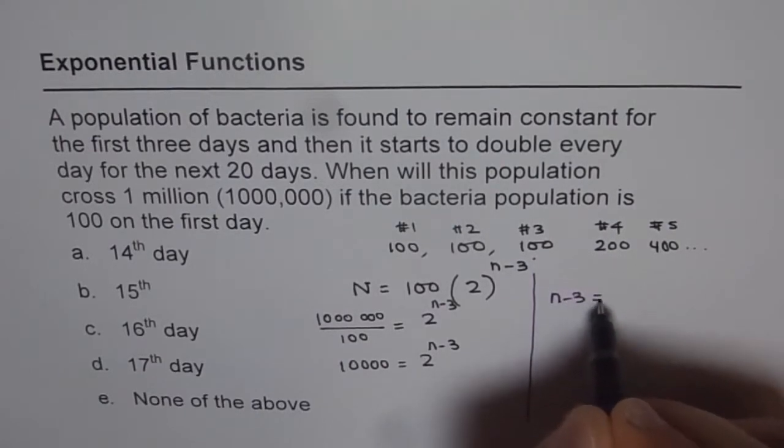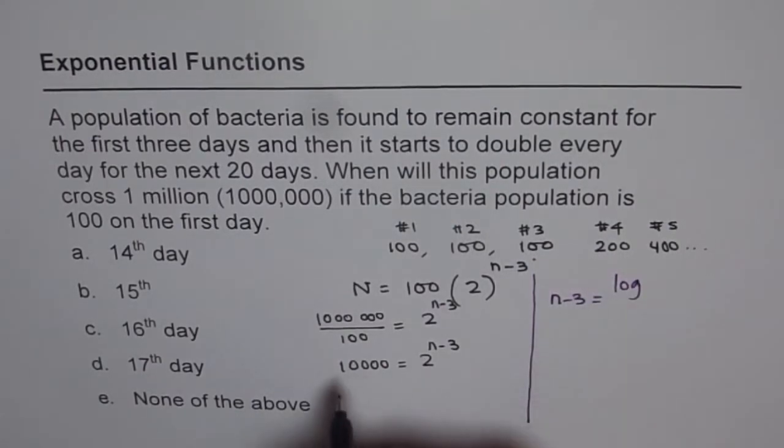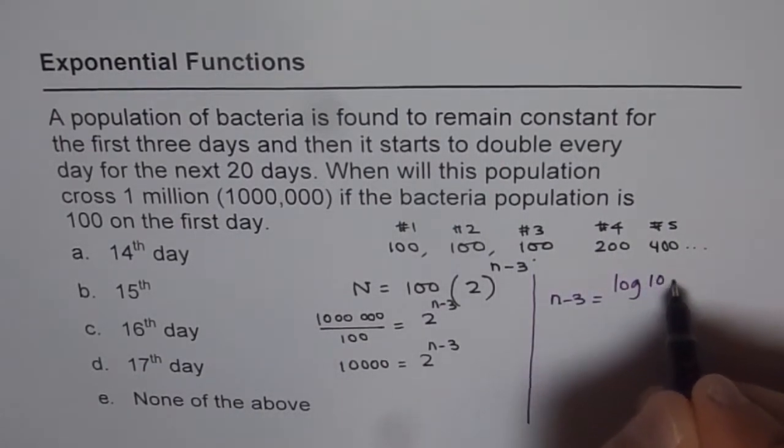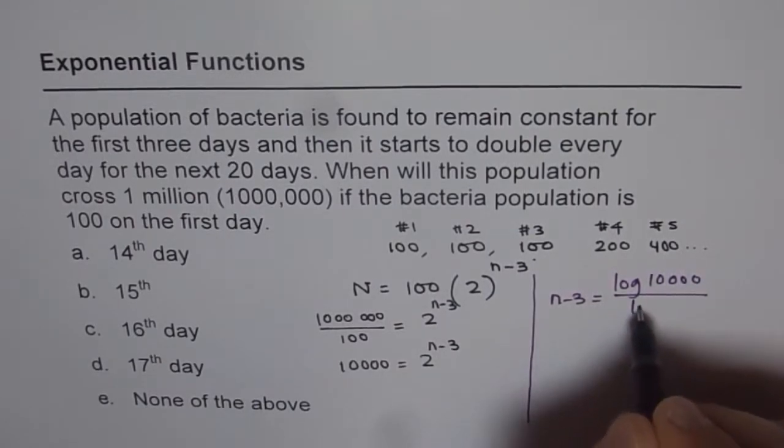You get n minus 3 equals log of 10,000 divided by log of 2, right?